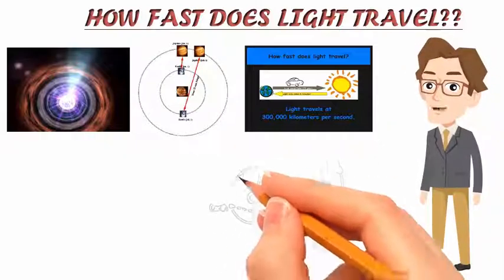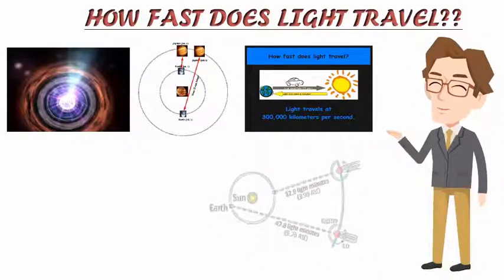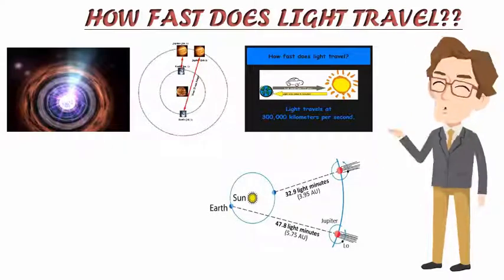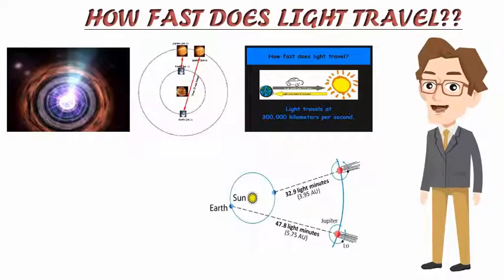4.37 years to reach us from Alpha Centauri, the nearest star system to the solar system. Alpha Centauri is therefore said to be 4.37 light years away.